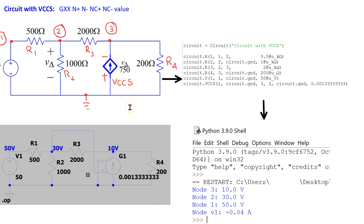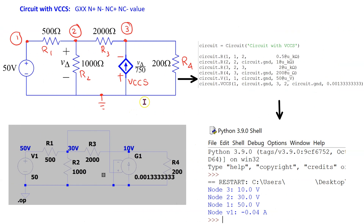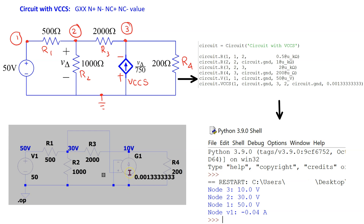This third example involves a voltage-controlled current source. In the PySpice netlist, part name G is not recognized. Hence, the voltage-controlled current source must be specified using the full acronym VCCS. The Python simulation result matches very well with the LTSpice simulation result.